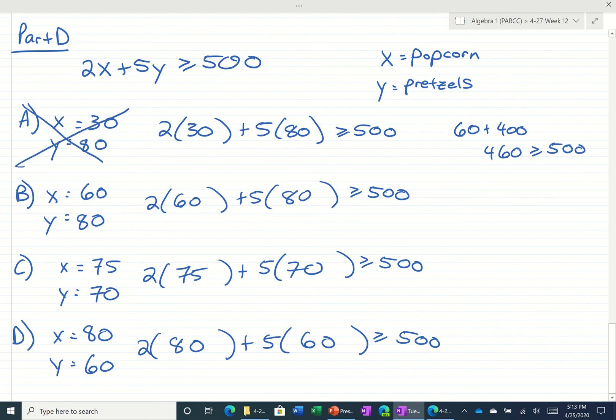Let's try the second one. $2 times $60 is $120. $5 times $80 is $400. So we get $520 is greater than or equal to $500. That's true.